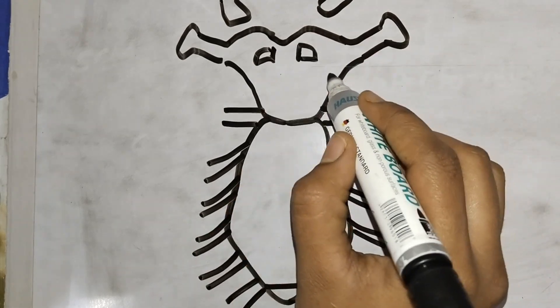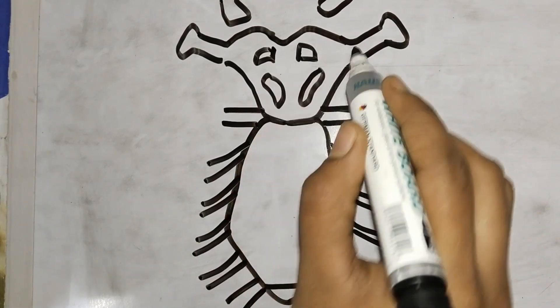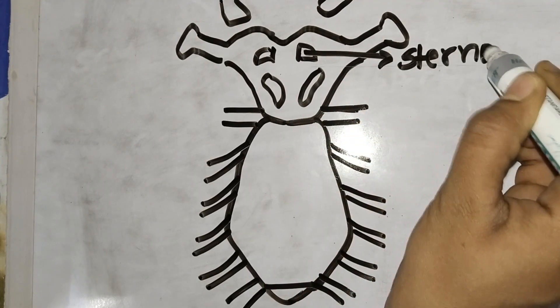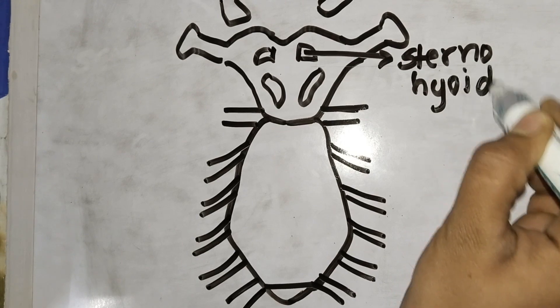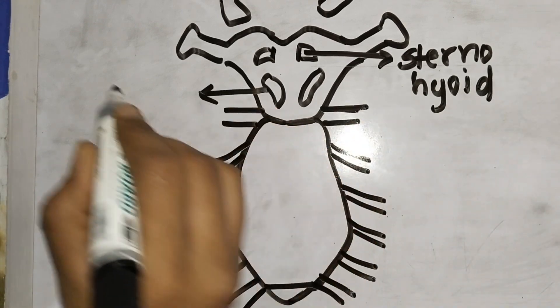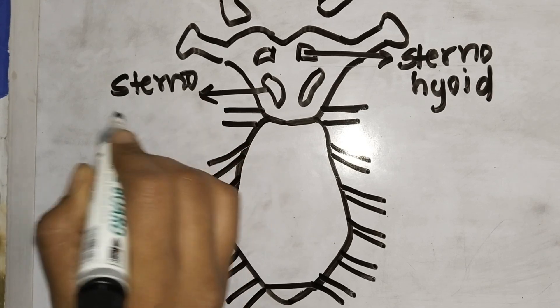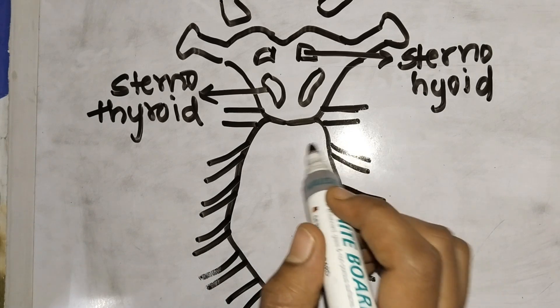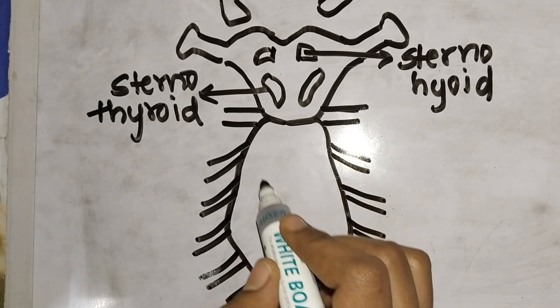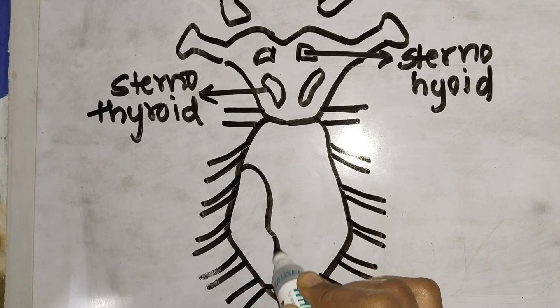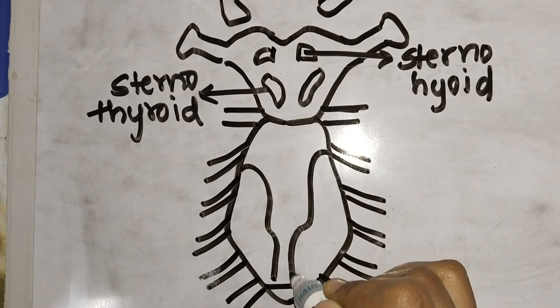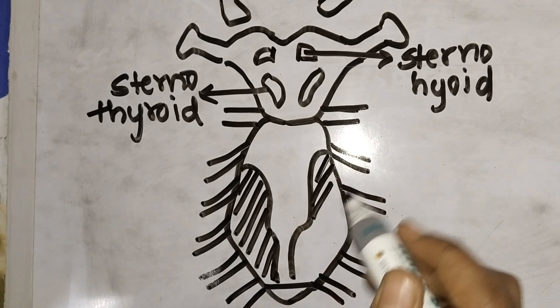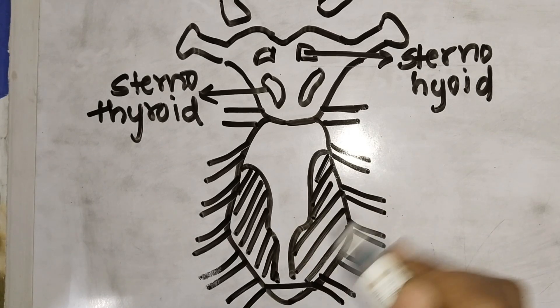This is the two muscles. This above two is known as the sternohyoid muscles. The bottom ones are known as sternothyroid muscles. The other part is sternocostalis.